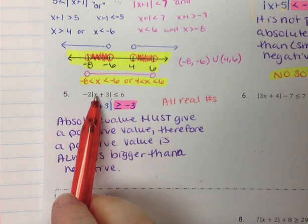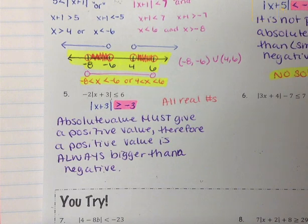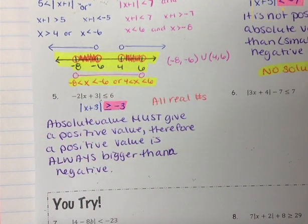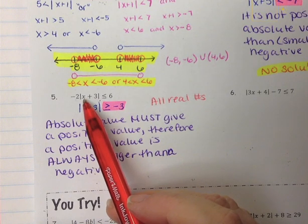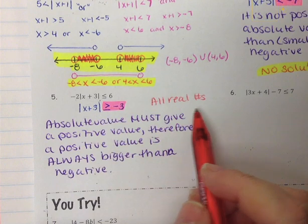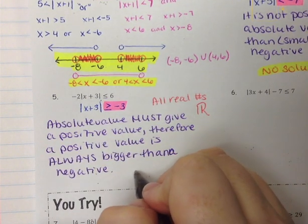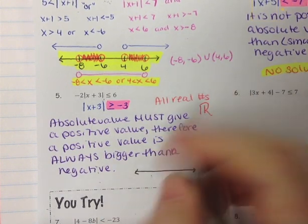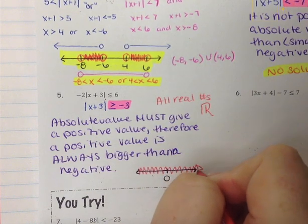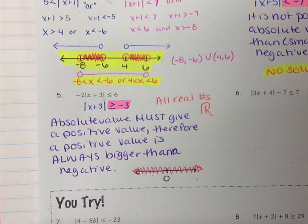For example, if we put in 5: 5 plus 3 is 8, absolute value of 8 is 8, times negative 2 is negative 16, and negative 16 is smaller than 6. If we put in negative 1: that gives a 2, absolute value of 2 is 2, times negative 2 is negative 4, and negative 4 is still smaller than 6. So all real numbers — written as a fancy R. For the number line, we draw it and shade everything with arrows pointing left and right, because all real numbers are included.